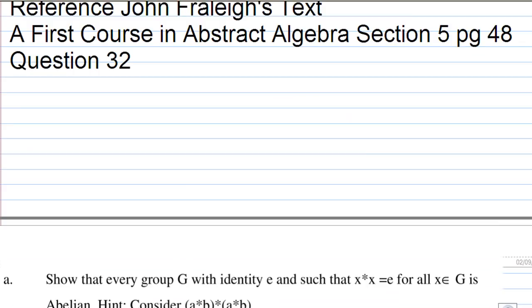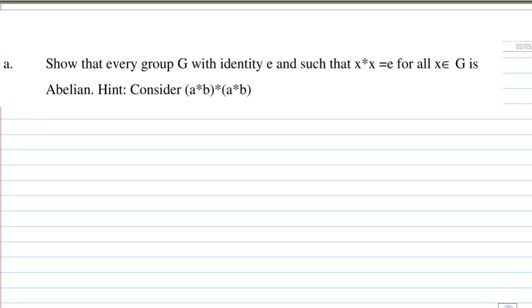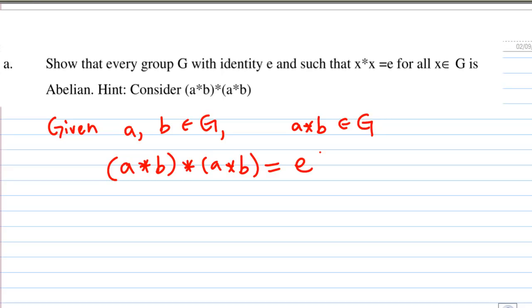So this is what we are going to start now. Since ab is element in G, given a and b in G, because G is a group, a times b also belongs to G. Therefore, a times b times a times b is equal to e. We are given this x times x equals e for all x in G.